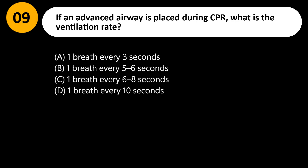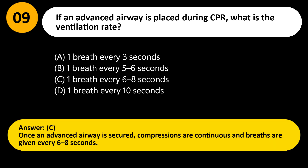If an advanced airway is placed during CPR, what is the ventilation rate? A) One breath every 3 seconds, B) One breath every 5–6 seconds, C) One breath every 6–8 seconds, D) One breath every 10 seconds. Answer: C. Once an advanced airway is secured, compressions are continuous and breaths are given every 6 to 8 seconds.